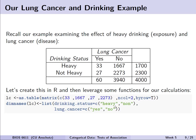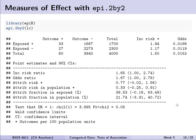Let's recall our example with lung cancer and drinking, where we measure drinking status as heavy or not heavy and whether someone developed lung cancer yes or no. We can do all the calculations by hand using the formulas from the previous lecture, or we can leverage R. The code snippet at the bottom of the slide creates a matrix and renames the rows and columns with respect to drinking status and lung cancer for our 2x2 table. We're illustrating this with the epi.r package, loading it with library(epi.r) and fitting the epi.2x2 function to our lung cancer data object.